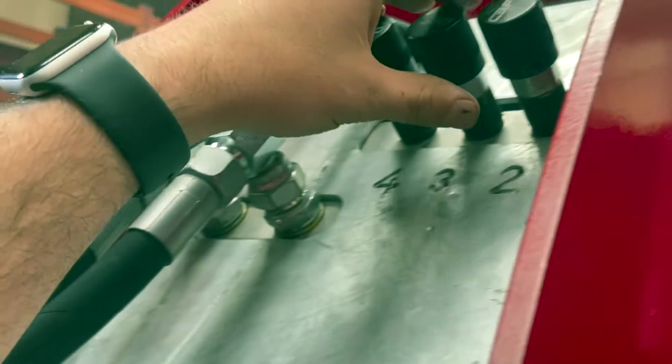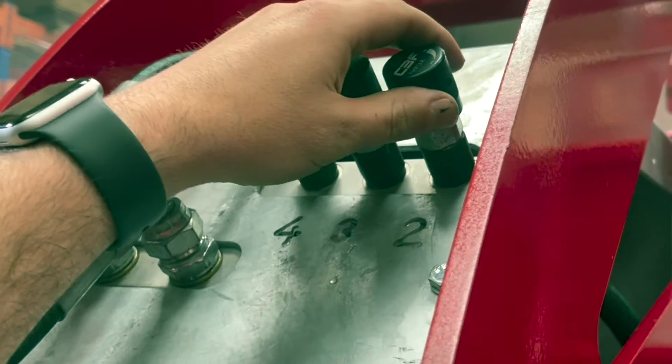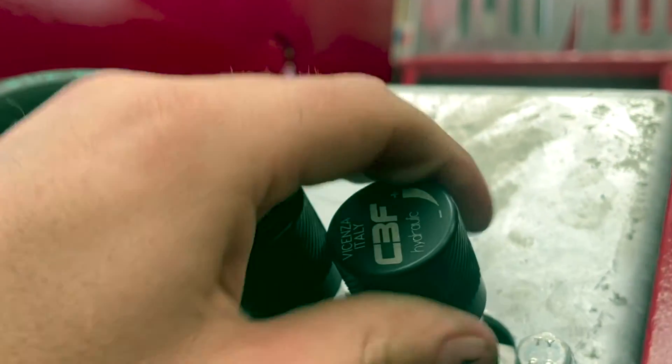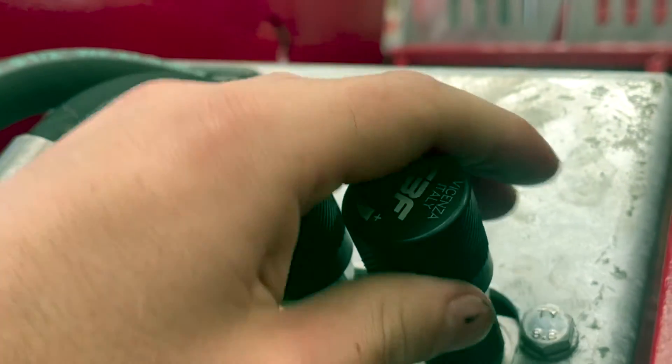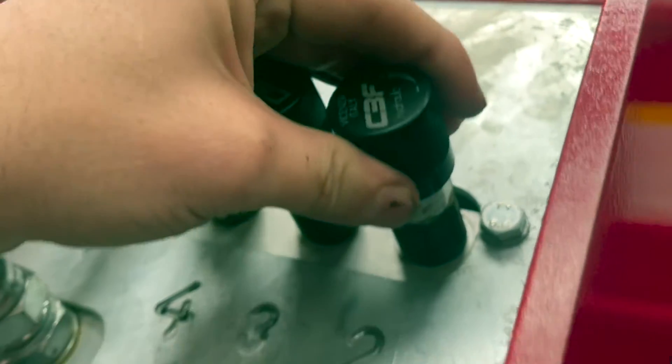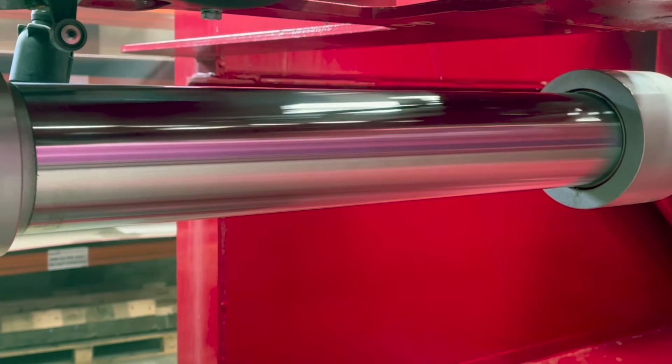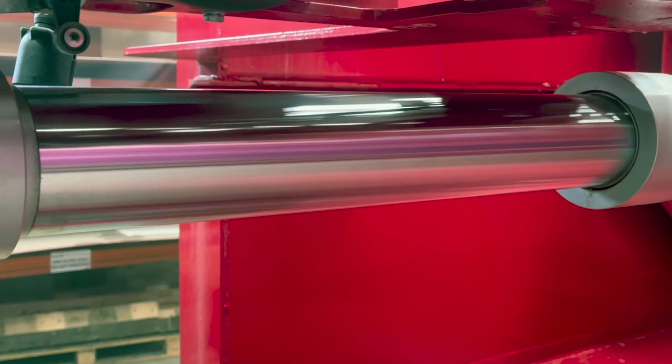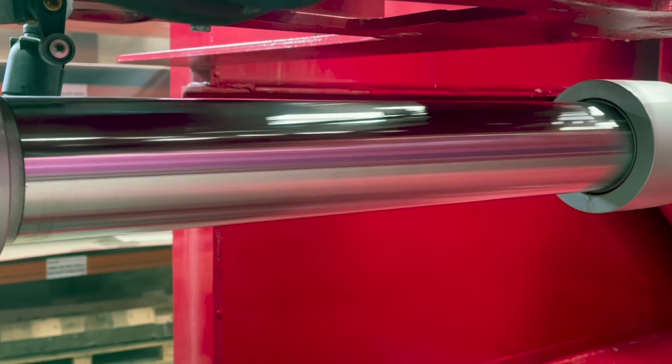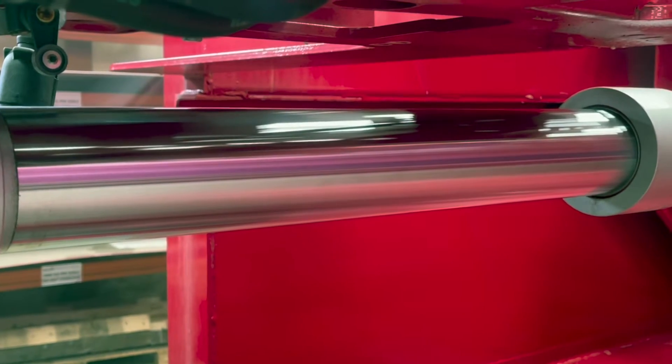To adjust the speed of stage number two, we simply use the flow control on the front. Anti-clockwise will increase the speed, and clockwise will reduce the speed of the ram. As you can clearly see, we can stop the ram from physically pushing out, or we can open the flow control right up, and you will see the speed of the ram stages start to increase.